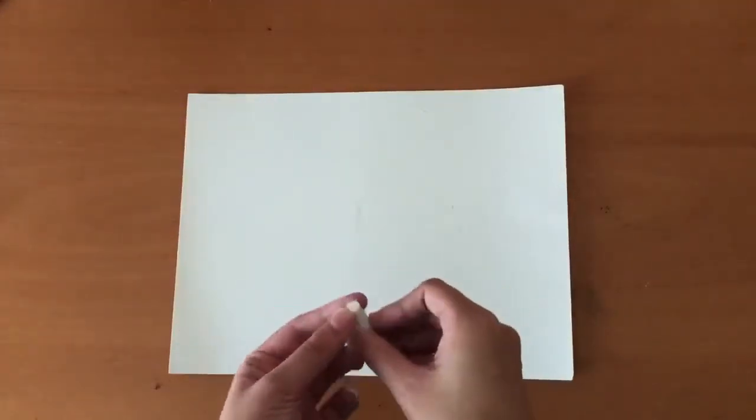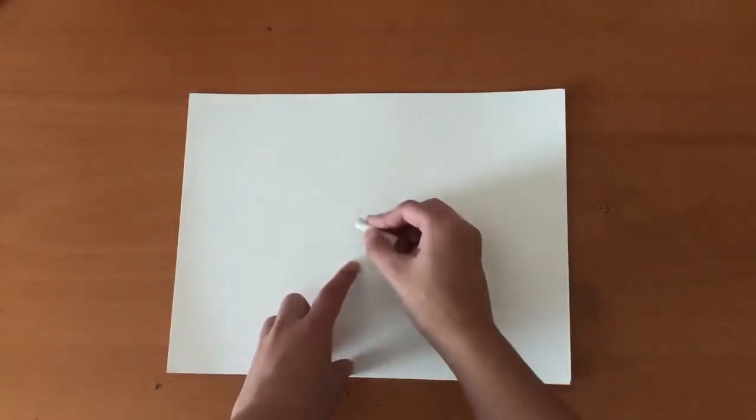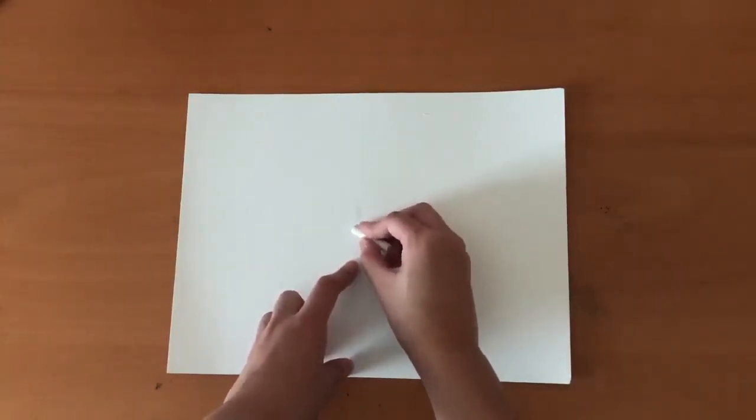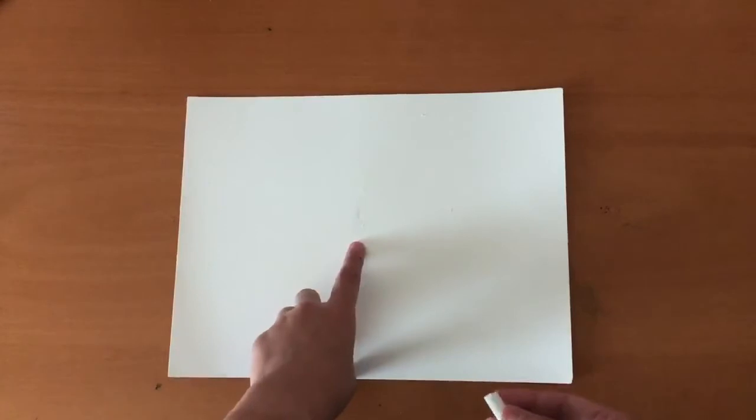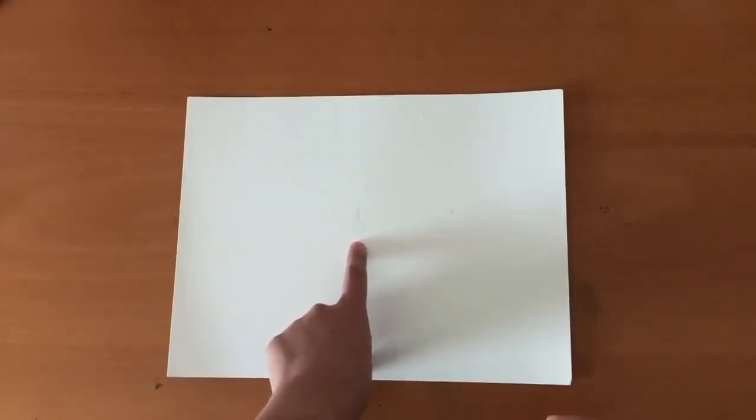First, we are going to be drawing a spiderweb with our white oil pastel. So we're going to take our oil pastel, find the center of the paper, and draw a dot. You may not be able to see it, but once we put the watercolor over it, then it will show up.